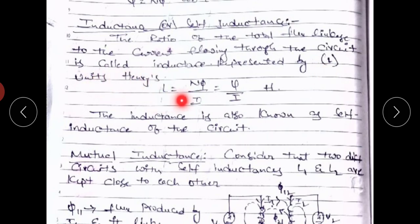Inductance L equals flux linkages divided by current. Here, flux linkages are represented by psi, with units of Henrys. The inductance is also known as the self-inductance of the circuit.